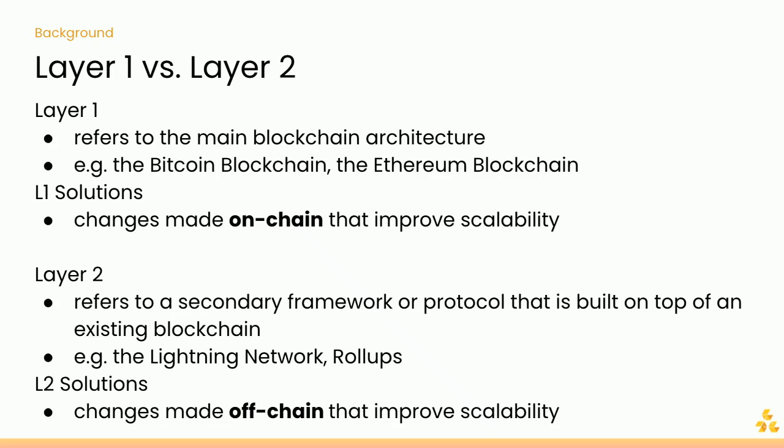Last week we talked about L1 and L2 — layer one versus layer two — and whenever you hear those terms they're generally referring to scalability within blockchains. Layer one refers to the main blockchain architecture; an L1 solution is a change made to the blockchain architecture itself intended to improve scalability. A layer two solution refers to a secondary framework or protocol built on top of the existing blockchain — a change made off-chain to improve scalability.